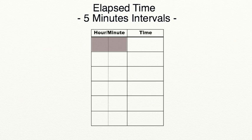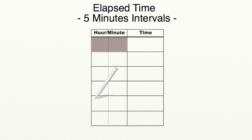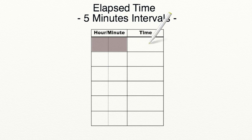Another strategy you can use to find elapsed time is a T-chart. As you can see, this T-chart is separated into hours and minutes — we have a column for hours, a column for minutes, and rows for our start time and end time.